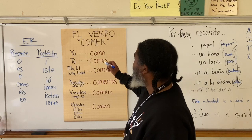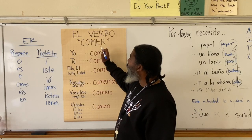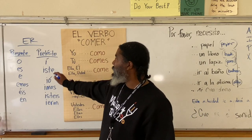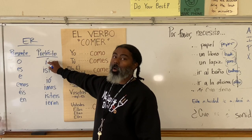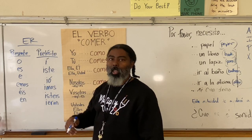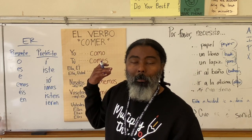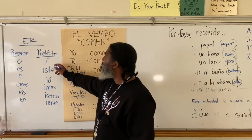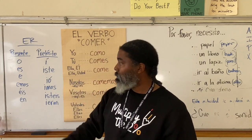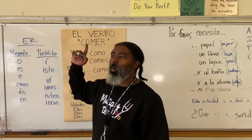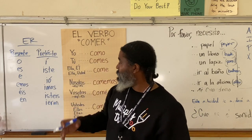So how do we do this? COM — no longer do we use the ER — and we say comí, with an accent mark over the I. Comí means I ate in the past. Comiste — comiste means you ate. Comió — comió means he, she, or it ate in the past.